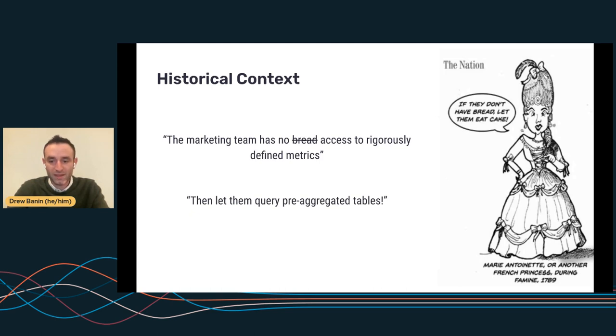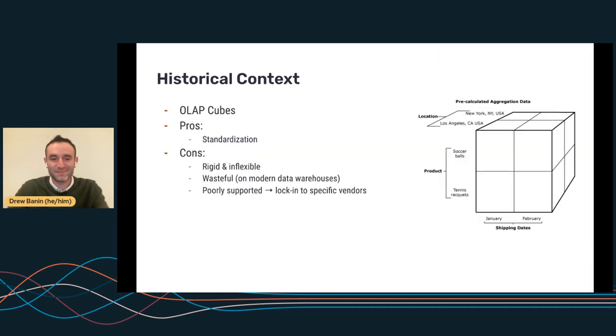Before we talk more about metrics, I do just want to say this line, if they don't have bread, let them eat cake is not correct. The actual line was let them eat brioche. And the second thing is Marie Antoinette never said it, so we should all collectively uncancel her. I have a lot of respect for Marie Antoinette personally. I said it.